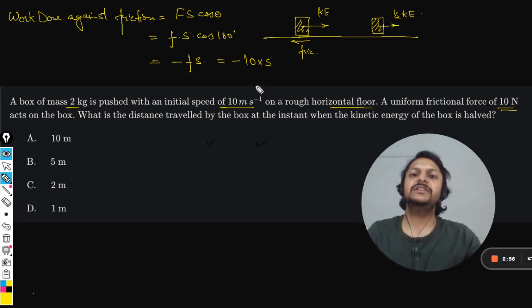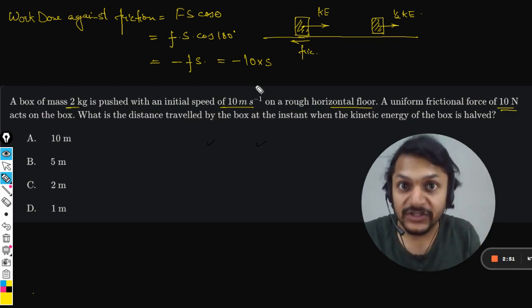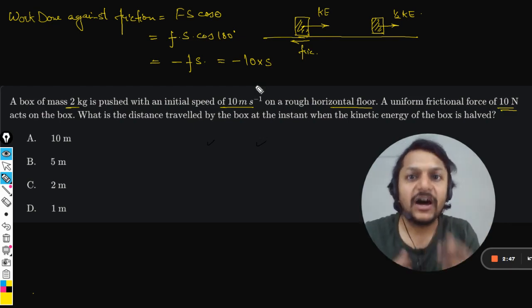This will be the work done against friction. Who is doing this work? Kinetic energy is doing this work. Half of the kinetic energy is lost, which means half of the kinetic energy should be equal to this work done.